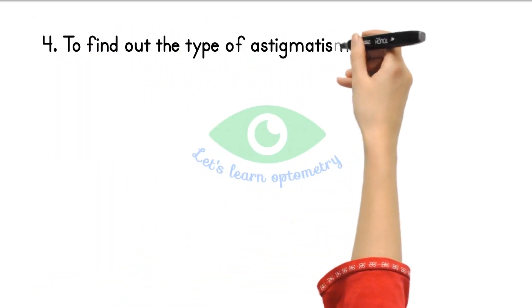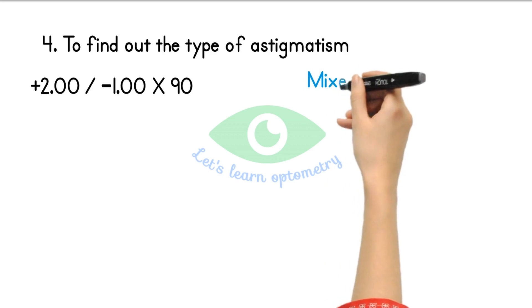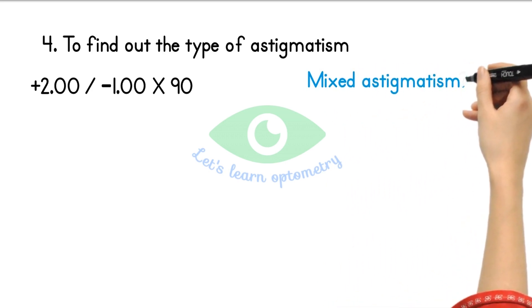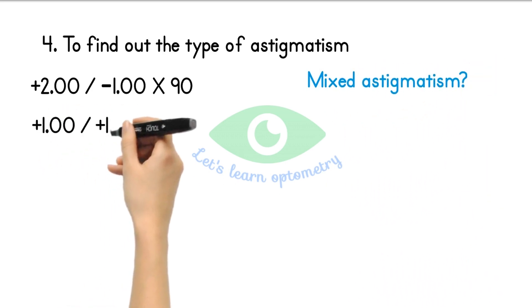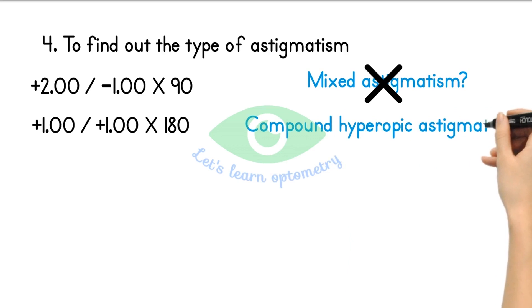To find out the type of astigmatism. For example, plus 2 spherical minus 1 at 90 degree axis. So since it does both plus and minus we may think that it is a mixed astigmatism. But after transposing it we get plus 1 and plus 1 at 180 degree axis. So it is a compound hyperopic astigmatism. So we need to always transpose a prescription to a plus to minus cylinder form and minus to plus cylinder form to confirm the type of astigmatism.